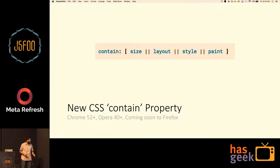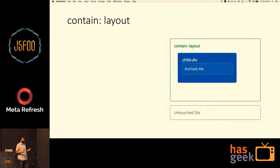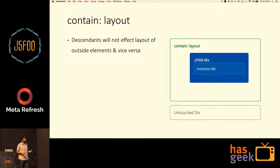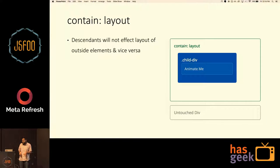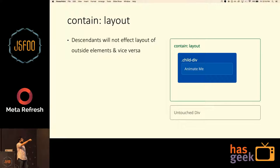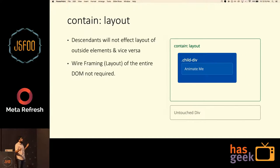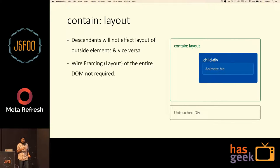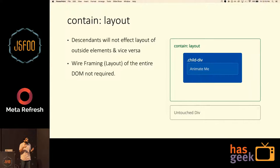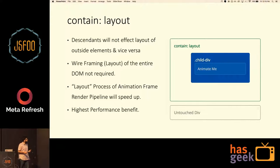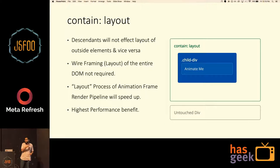Next, the new CSS contain property — introduced in Chrome 52 and Opera 40, coming soon to Firefox, with huge developer support. If you define contain: layout, you tell the browser that descendants of this element do not affect the layout of any other elements. For example, a child div's position does not affect an untouched div elsewhere. So layout of the entire document does not need to happen — only layout of that particular element is rerun when a descendant changes. This gives you the highest performance benefit from the CSS contain property.